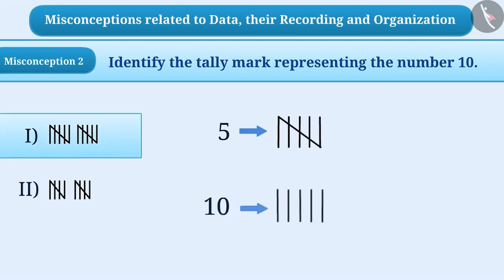In this way, they understand that in option 1, a slanting line has been drawn on two groups of five to represent the number 10. So they choose the first option, which is the wrong answer.